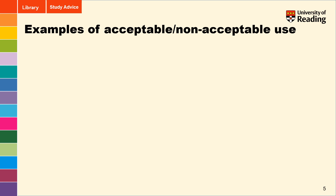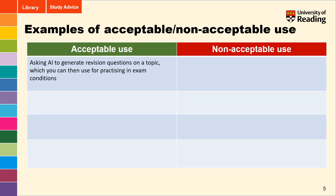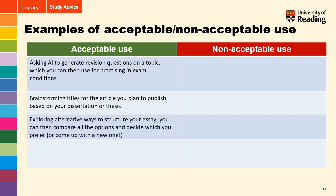With this in mind, it is worth considering ways in which using GATs can assist your criticality and are generally acceptable, as well as uses of GATs that may hinder your critical thinking ability and are considered unacceptable or prohibited. Some examples of acceptable use may be: asking AI to generate revision questions on a topic, which you can then use for practising in exam conditions; brainstorming titles for the article you plan to publish based on your dissertation or thesis; or exploring alternative ways to structure your essay, comparing the options and deciding which you prefer.